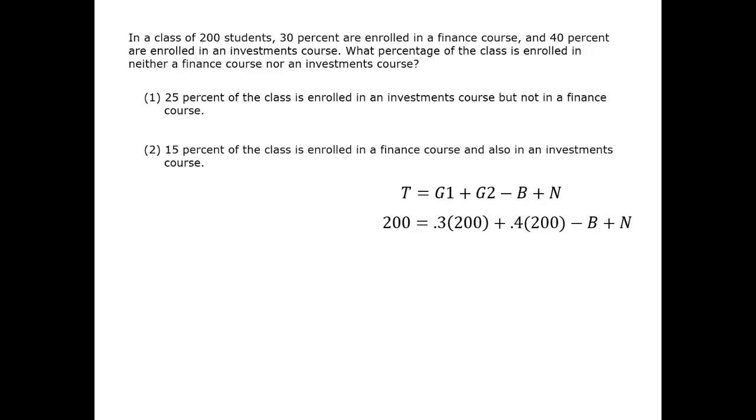Remember that we're subtracting B in this equation because it's counted twice in G1 and G2, so we subtract it so that it's counted an overall number of one time. Let's turn to the data statements separately first.